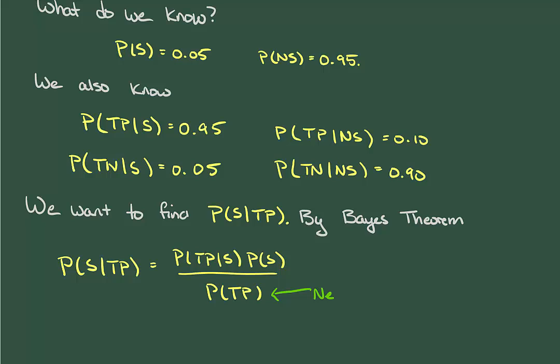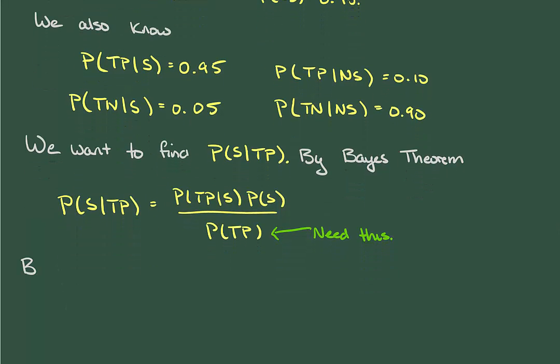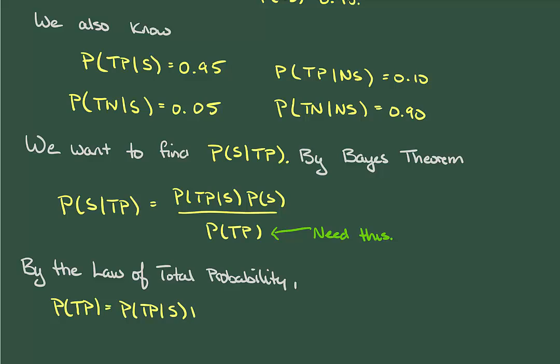Two of these three things we know, but we need to find the probability that a randomly selected person tests positive, regardless of condition. To do this, we can use the Law of Total Probability. So the probability of testing positive depends on whether you're a skooma user or not, and we can evaluate it as such. I'm just going to leave this in exact form right now. We'll evaluate it at the end.